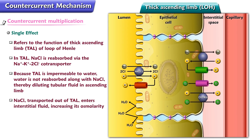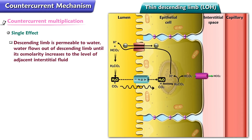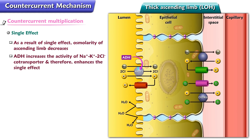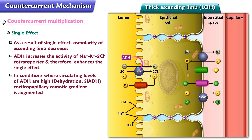The sodium chloride transported out of the thick ascending limb enters the interstitial fluid, increasing its osmolarity. Since the descending limb is permeable to water, water flows out of the descending limb until its osmolarity increases to the level of the adjacent interstitial fluid. As a result of the single effect, the osmolarity of the ascending limb decreases. ADH increases the activity of the sodium-potassium-2-chloride cotransporter and therefore enhances the single effect. For example, in conditions where circulating levels of ADH are high, like dehydration or syndrome of inappropriate ADH secretion, the corticopapillary osmotic gradient is augmented.